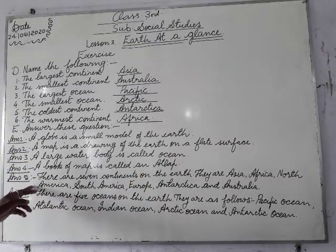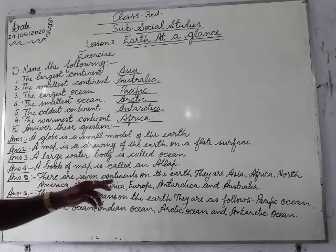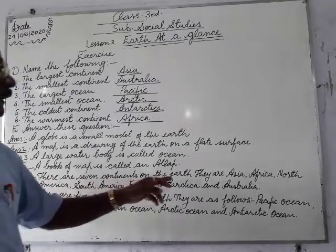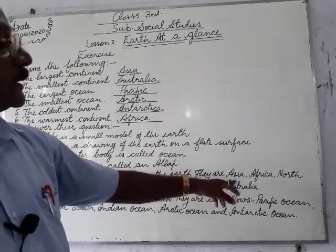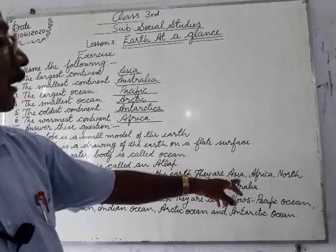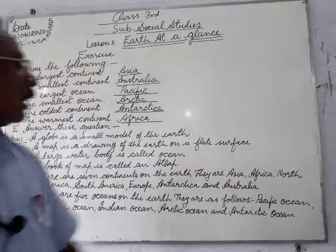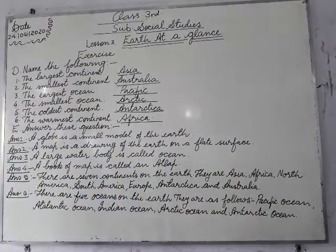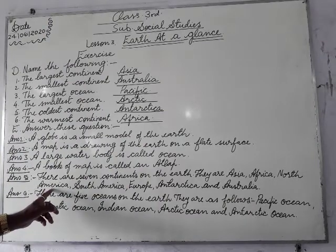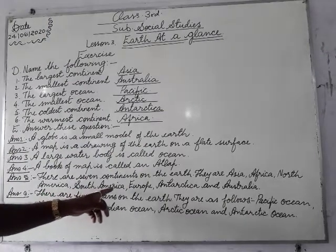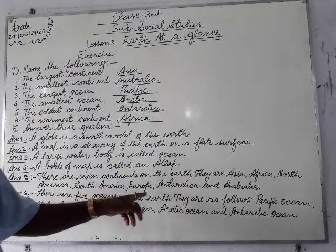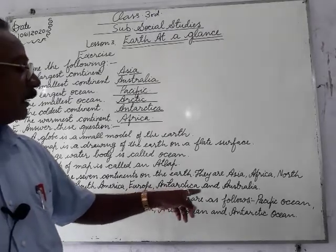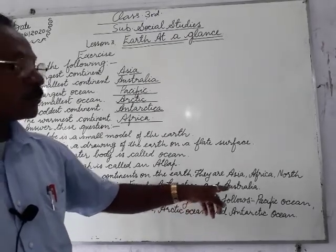Number five: There are seven continents on the earth. They are Africa, North America, South America, Europe, Antarctica, and Australia.